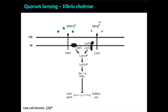In Vibrio cholerae, it produces two autoinducers — autoinducer 1 and autoinducer 2. At low cell densities, the receptors are unbound and sit in the membrane. These receptors are histidine kinases, which means these proteins can donate a phosphate from ATP and deliver it to another protein — in this case LUXU. LUXU donates it to LUXO, and now LUXO in the phosphorylated form can do work. It can land on DNA and turn on the expression of four non-coding small RNAs, the QRRs — quorum regulatory RNAs — that will be the focus of the first half of the talk.